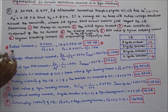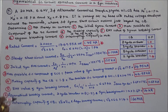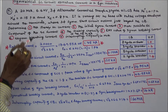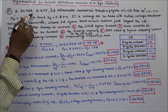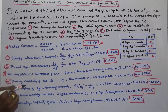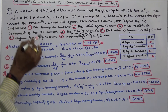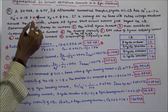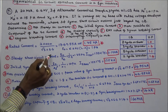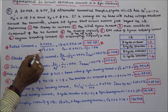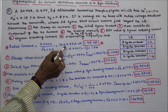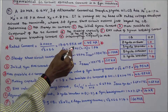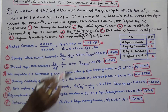First step, we have to calculate the rated current. Rated current is equal to MVA divided by root 3 into 6.6 KV. That is 20,000 KVA divided by root 3 into 6.6, which gives rated current as 1749.5 A, or approximately 1.75 kA.